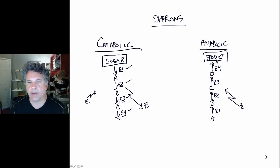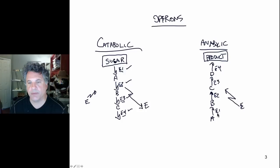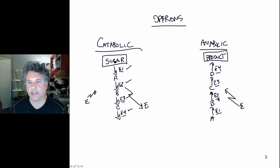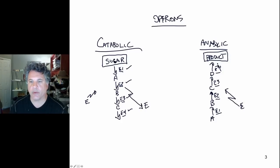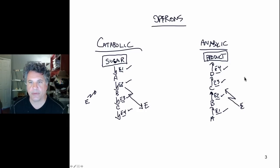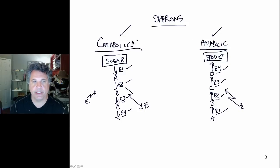In contrast to catabolic pathways, if you have a lot of the product around, it would seem wasteful energetically to invest energy in manufacturing the gene products and enzymes involved in running the pathway to synthesize that product — because the cell already has it. It would behoove the bacterial cell to turn off those genes when there is plenty of product. However, if the product is at very low concentrations or absent, the cell needs it, and it should turn on — positively regulate — the genes encoding these enzymes. We will look at the regulation of both catabolic and anabolic operons in bacteria, starting with catabolic operons.